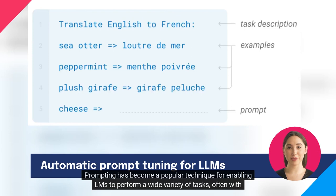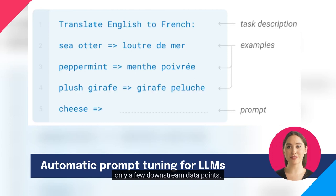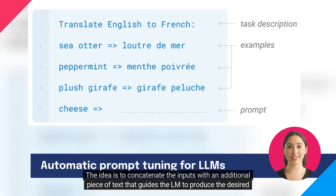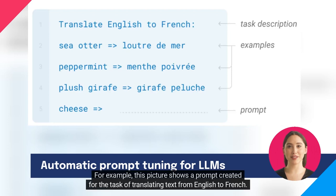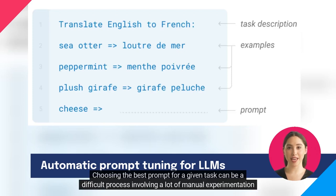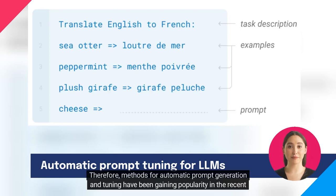Prompting has become a popular technique for enabling LMs to perform a wide variety of tasks, often with only a few downstream data points. The idea is to concatenate the inputs with an additional piece of text that guides the LM to produce the desired outputs. For example, this picture shows a prompt created for the task of translating text from English to French. Choosing the best prompt for a given task can be a difficult process involving a lot of manual experimentation and trial and error. Therefore, methods for automatic prompt generation and tuning have been gaining popularity in recent years.